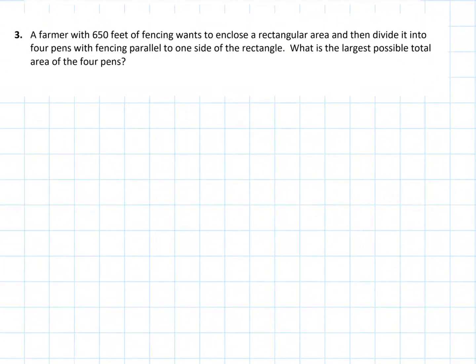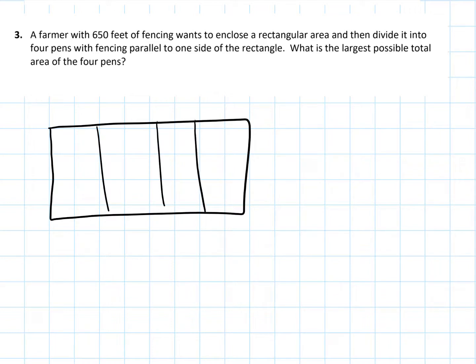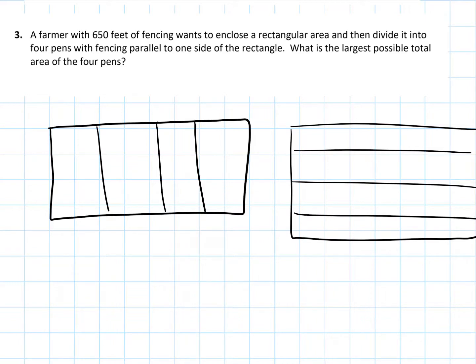So let's suppose that we have a farmer, has 650 feet of fencing, wants to use that to enclose a rectangular area and divide it up into four pens with fencing parallel to one side of the rectangle. So there's lots of ways to draw this. If we've got a rectangular fence, we could draw those four pens. We could create a rectangular fencing in this direction. We could also have done it this way as well. We could have had more of a square-like shape. I mean, there's lots of ways that he can do this.